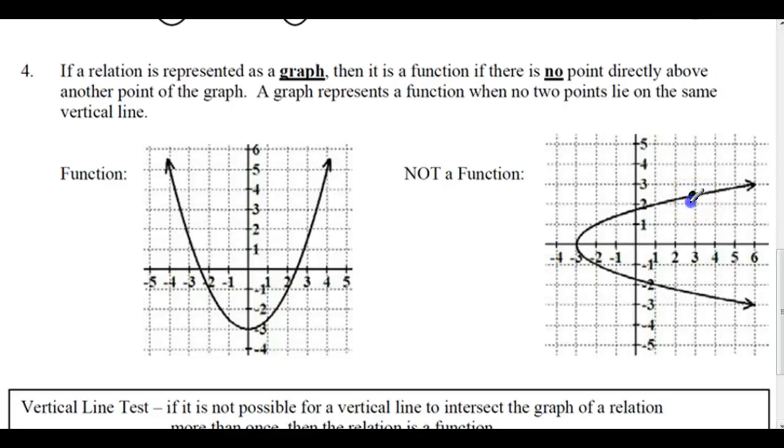which we call the vertical line test, which we'll get into in a sec. But you notice here that the value 3 has two different y values. You have the ordered pair (3, 1). You have the ordered pair (1, 2). You have the ordered pair (1, -2). The value 1, if you made a table of values, would be repeated and therefore not a function.